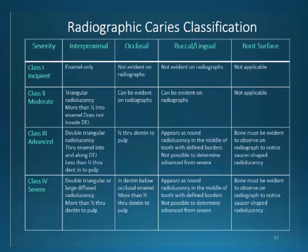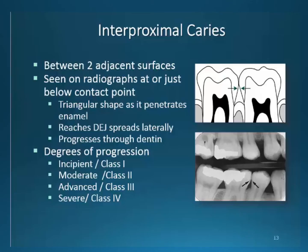Going back to radiographic interpretation of decay and moving away from Black's, I will leave you to review this chart on your own. I created this to help you review the radiographic classifications and the possible areas they may appear when exposed to x-rays. The following slides will go into more detail. Interproximal decay is located on two adjacent tooth surfaces. If identified just below the contact point, the beginning of the lesion can take on a triangular shape as it penetrates into the tooth structure, reaching the dentin enamel junction. The degrees of progression range from 1 to 4.